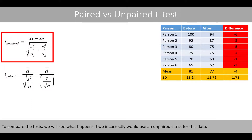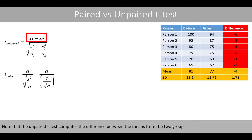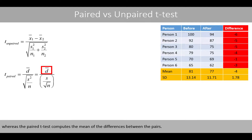To compare the tests, we will see what happens if we incorrectly use an unpaired t-test for this data. This is how the t-statistic is calculated for a paired t-test, which is the correct test to use for this kind of data, since we have paired measurements. Note that the unpaired t-test computes the difference between the means from the two groups, whereas the paired t-test computes the mean of the differences between the pairs.